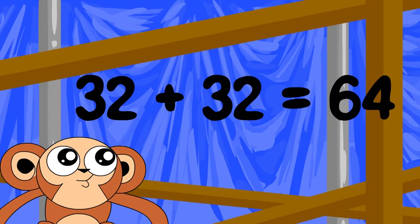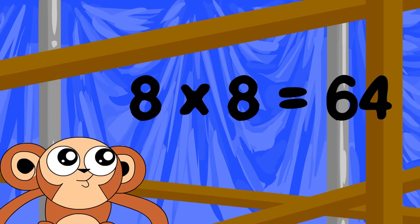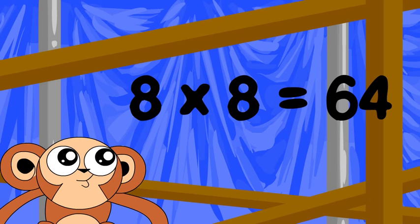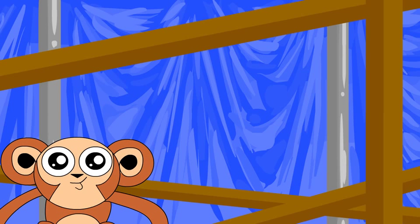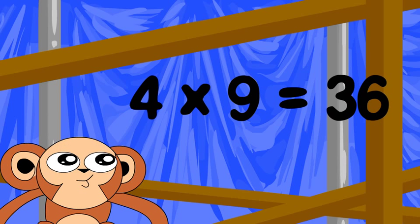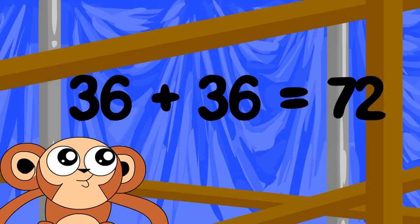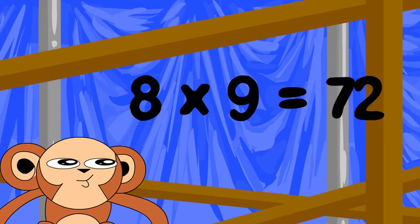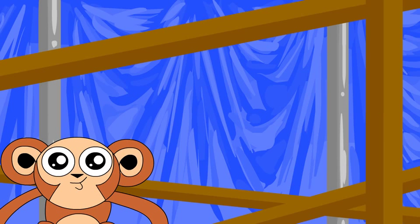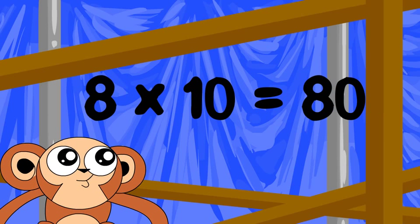4 times 9 is 36. Double 36 is 72. So 8 times 9 is 72. 8 times 10 is an easy one — that's 80. Good job!